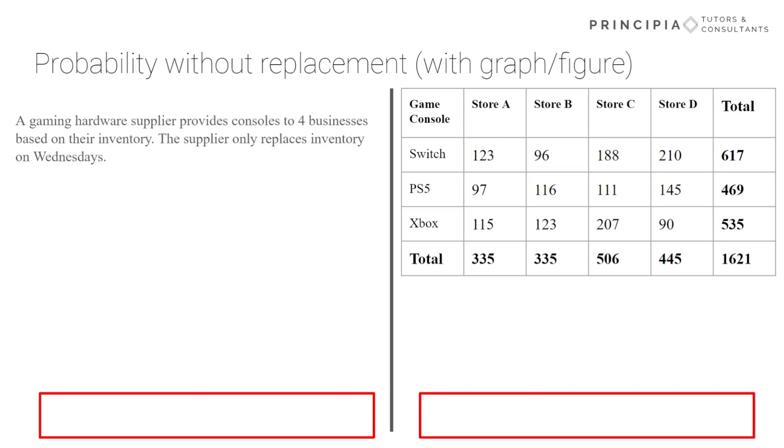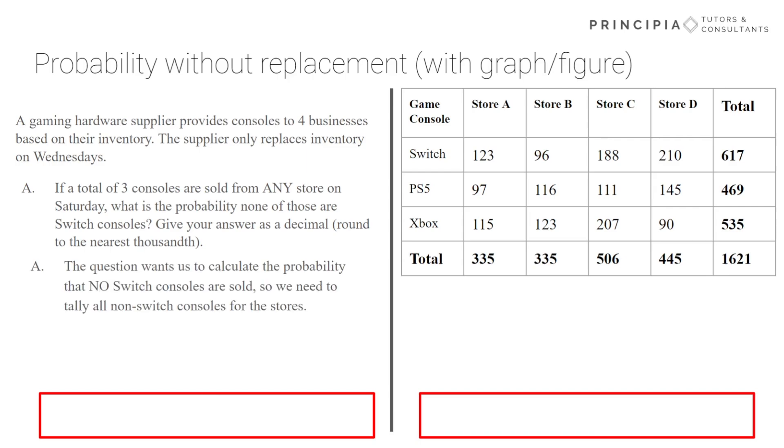Now for this next question, without replacement. And so three stores, three consoles sold from any store on Saturday. The probability none of these are switch consoles. And so make sure you give your answer as a decimal rounded to the nearest thousandth. And so it wants us to calculate the probability that no switch consoles are sold. So remember, just like we did with the cards, tally all non-switch consoles for the stores. So with that hint, pause the video, attempt to solve it on your own. We'll review shortly.